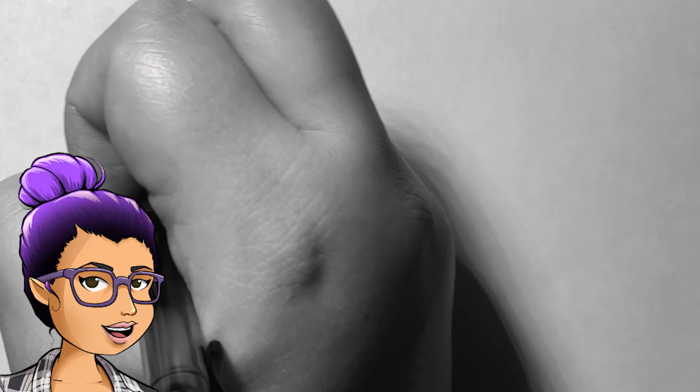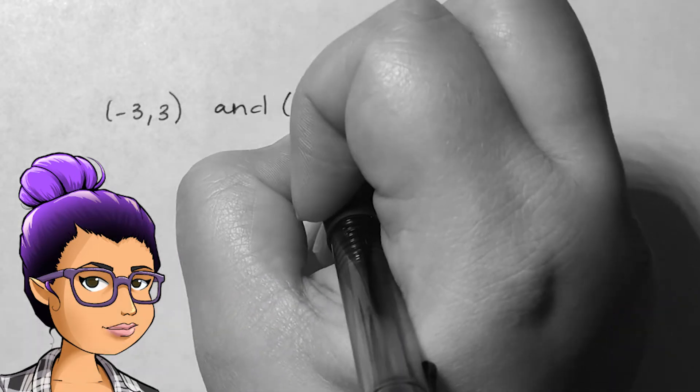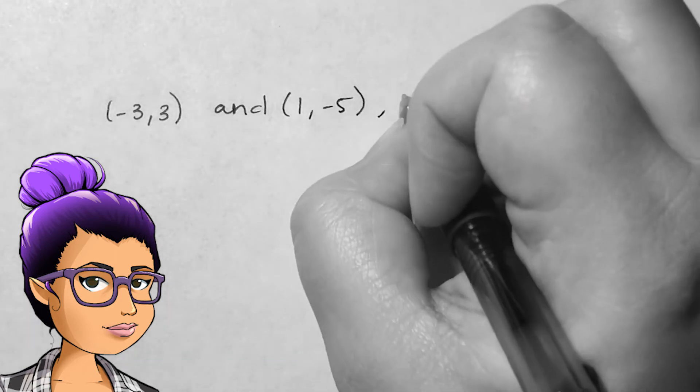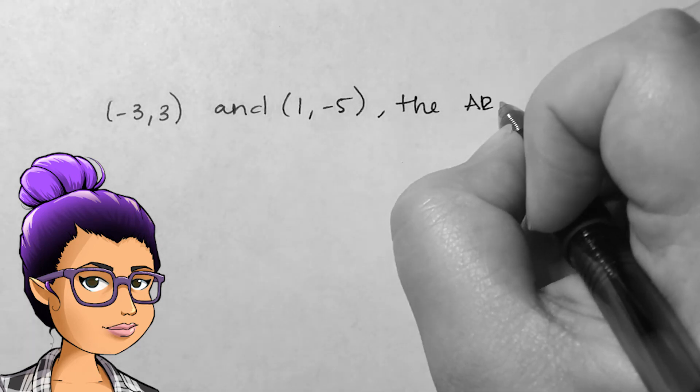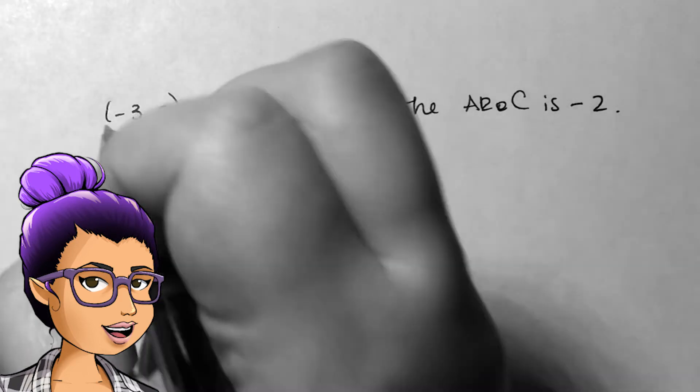Say I did not know the function equation for f(x), but knew that between the points (-3, 3) and (1, -5), the average rate of change is negative 2. How could I use this information to estimate f(0)?